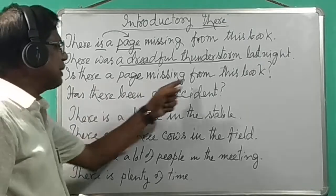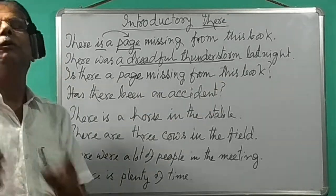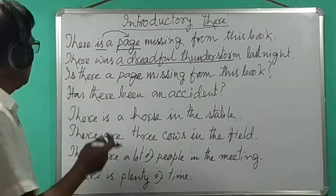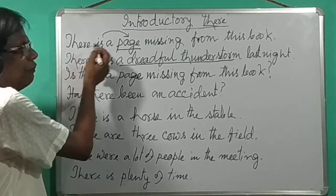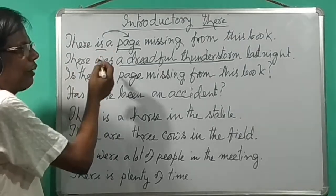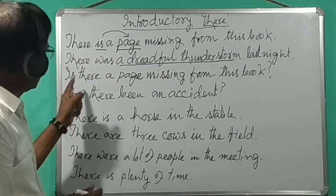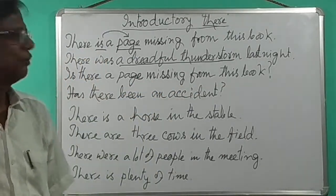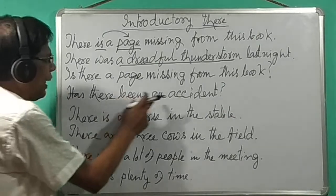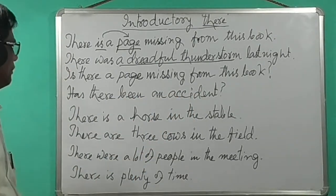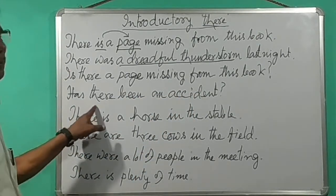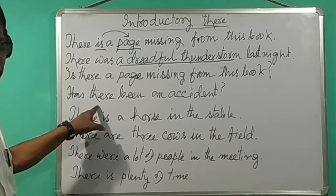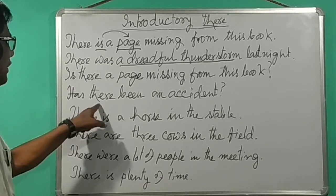When asking a question: 'Is there a page missing from this book?' We use inversion — verb before subject. 'Has there been an accident?' Here, 'there' is introductory 'there'; it is not the real subject.